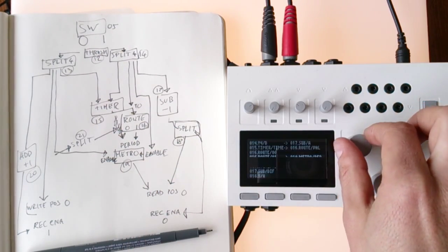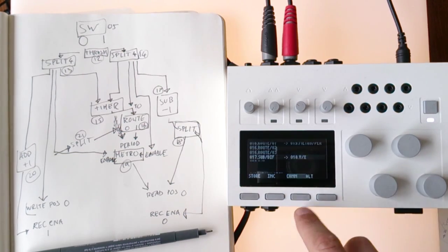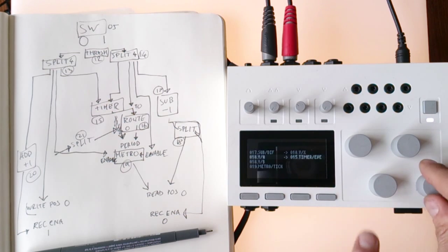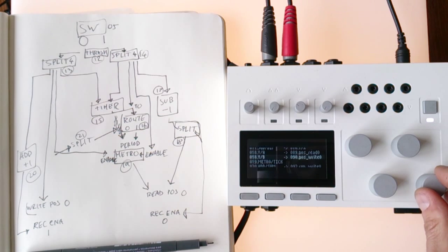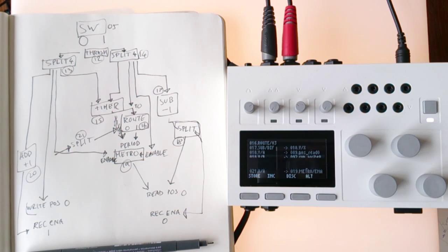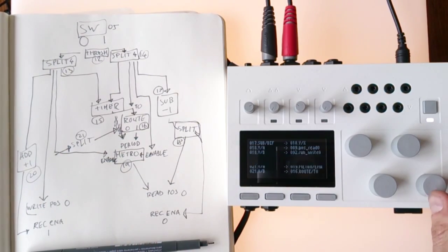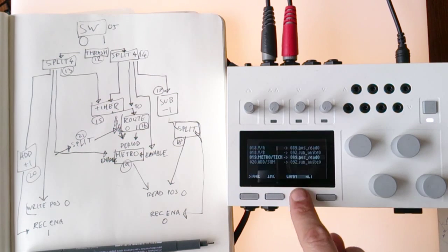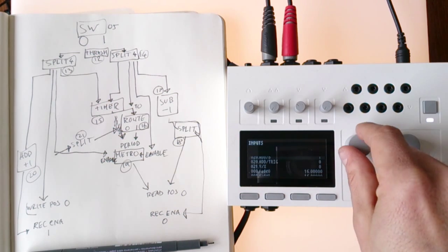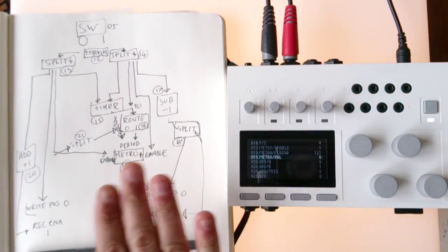Route 1 goes to the metro period. Sub 17 goes to split 18, and split 18 goes to the read position — pause read. The other output of split 18 goes to run right to stop recording. The metro also needs to go to pause read, sending a 0 so it always starts from the beginning. That is my network — I've now built my network.